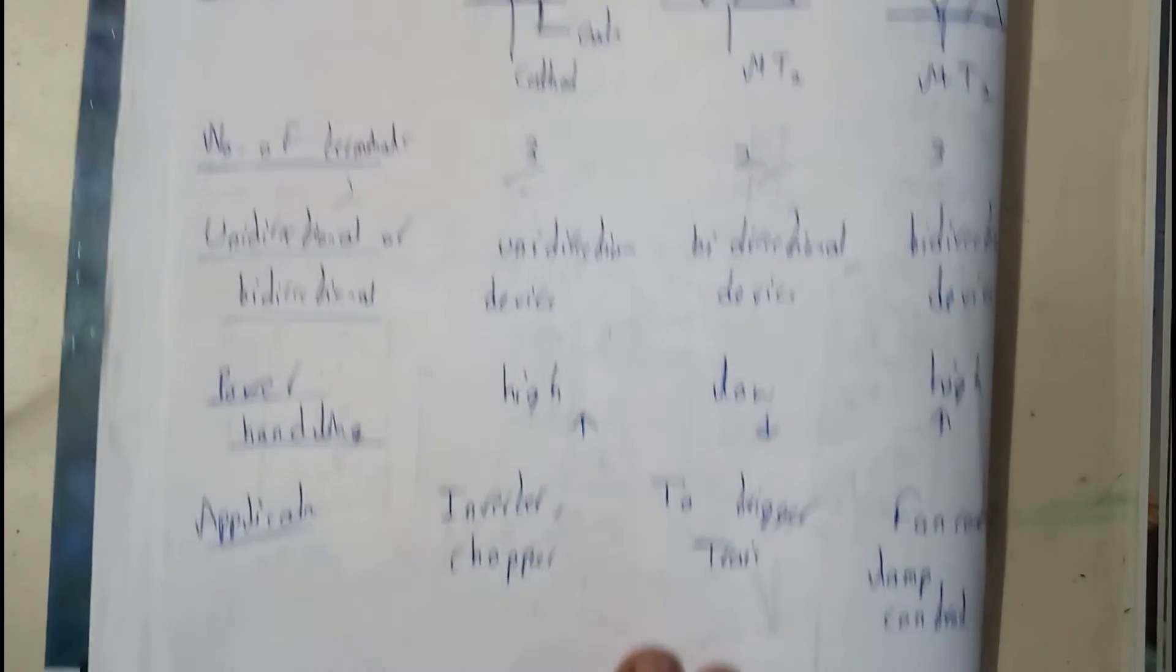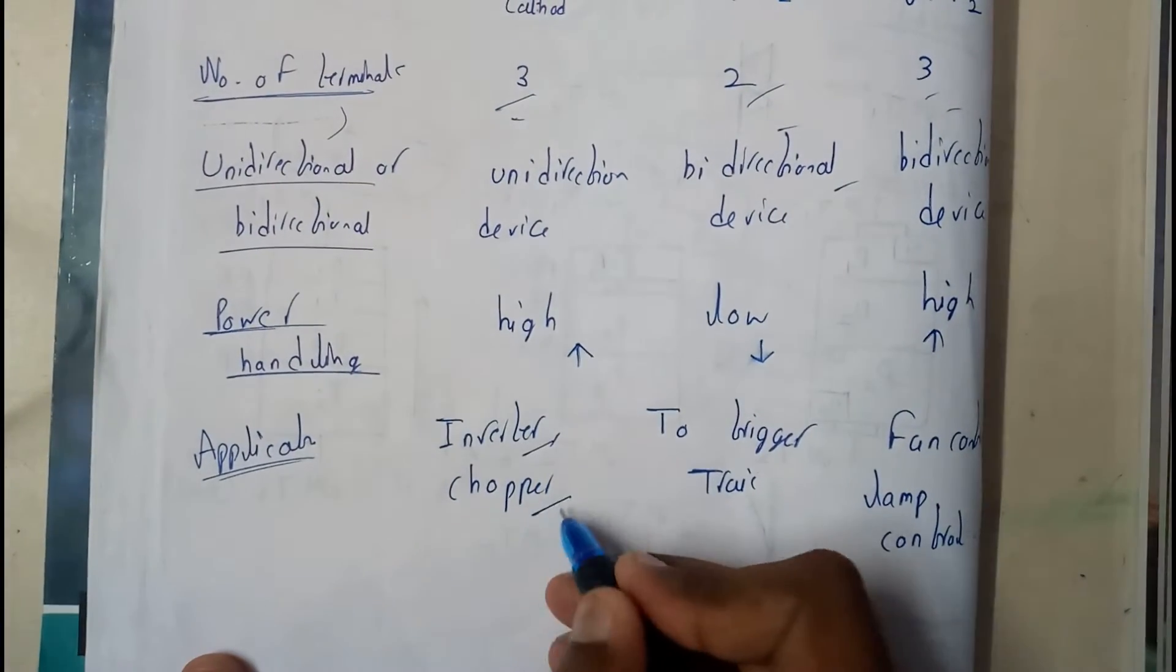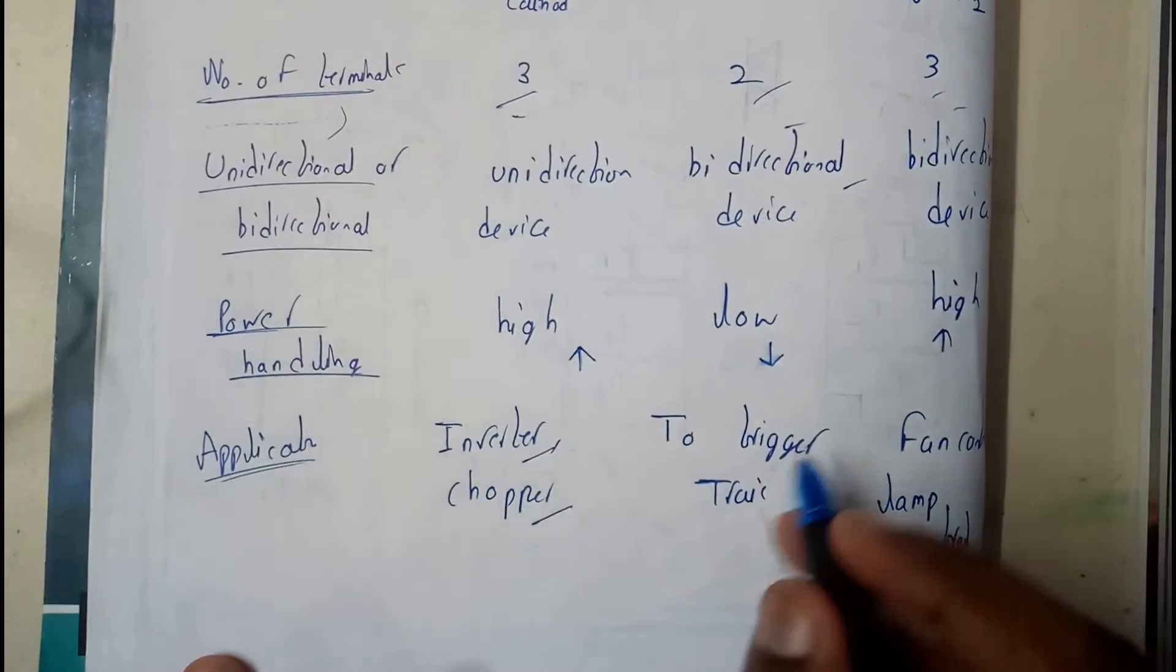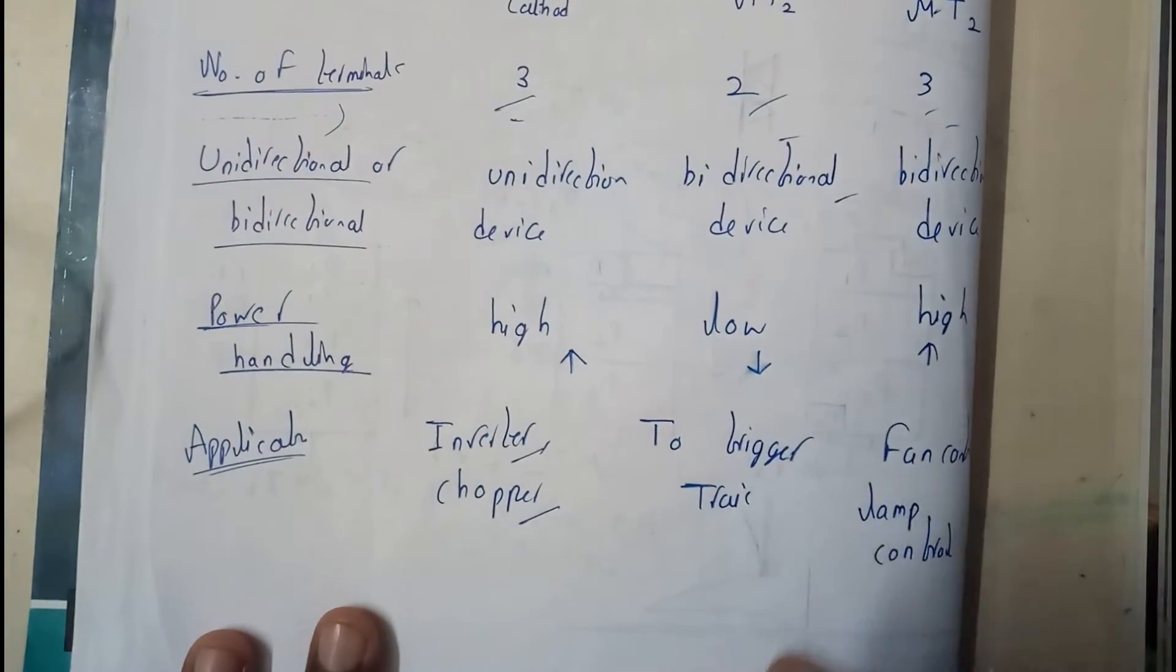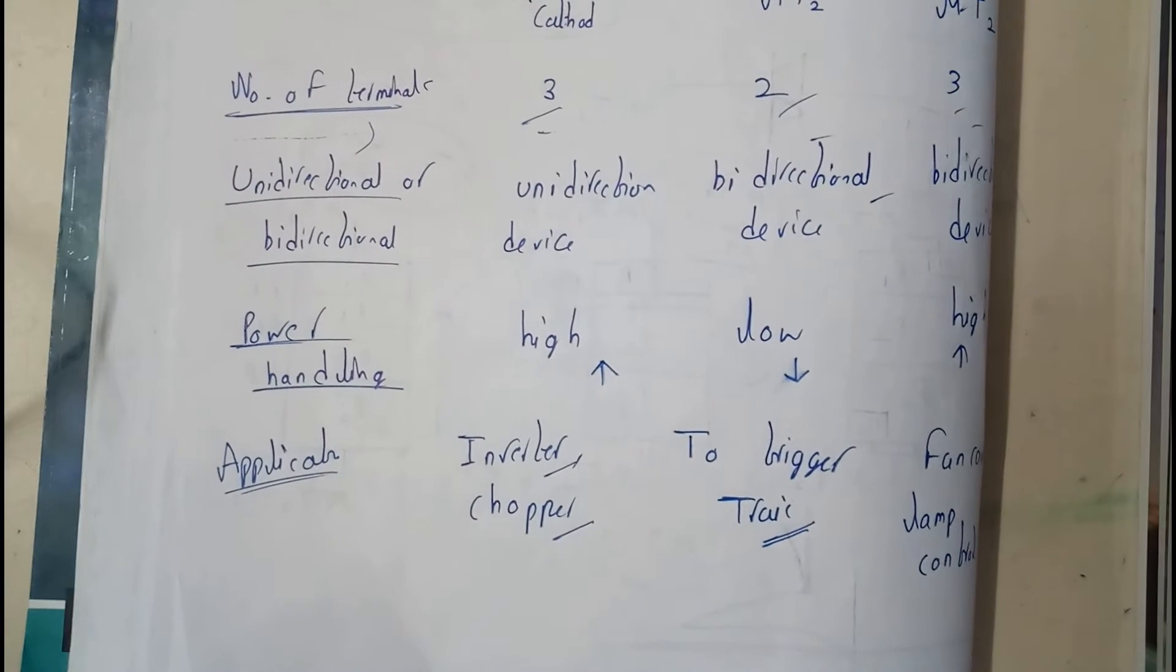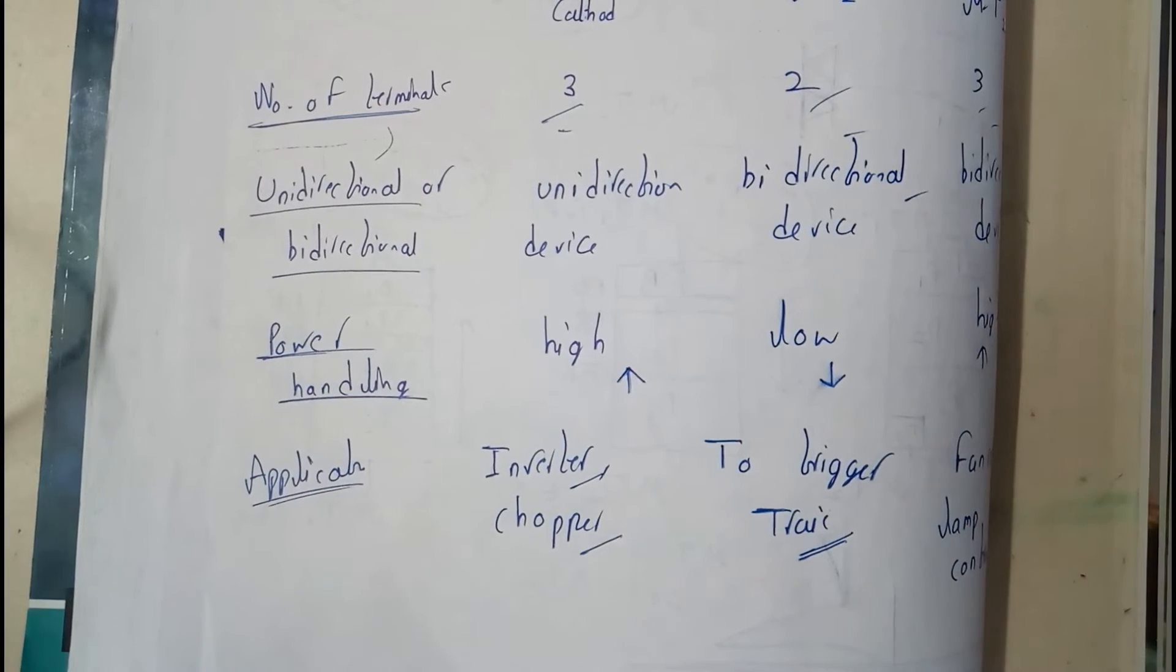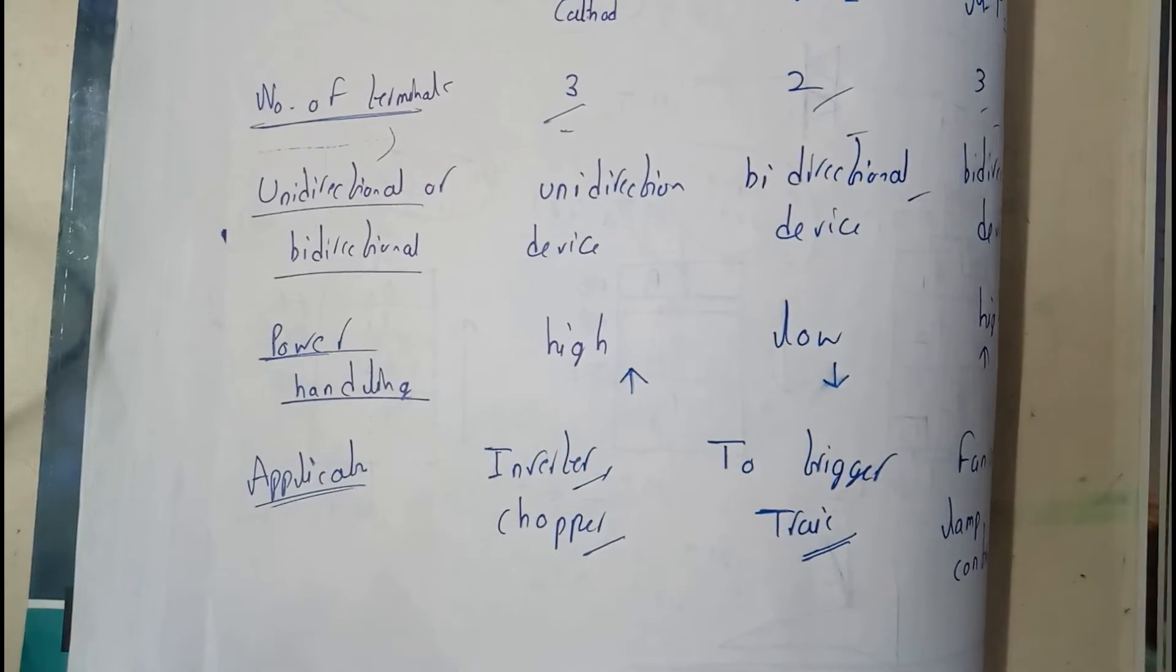Moving on to applications: SCR is used in inverters and choppers. DIAC is majorly used for triggering circuits, like triggering TRIAC or in proximity sensor circuits.